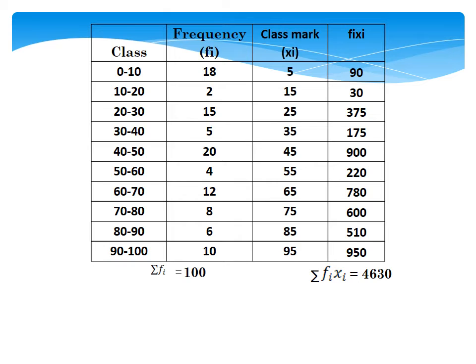In the fourth column, we have to find the fx values. The second column has the frequencies (f) and the third column has the class marks (x). We multiply f and x to get fx, and fill these fx values in the fourth column. We are now going to find the fx for each class.